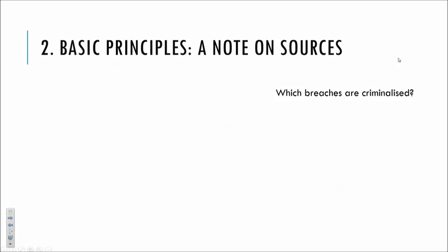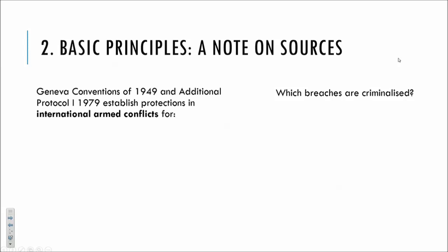Another question is one of sources — where does this body of law come from? We need to look at the Geneva Conventions of 1949 and their additional protocols. But we also need to bear in mind that not every breach of a Geneva Convention or one of the protocols is necessarily criminalised. We always need to keep in mind which are the criminal breaches.